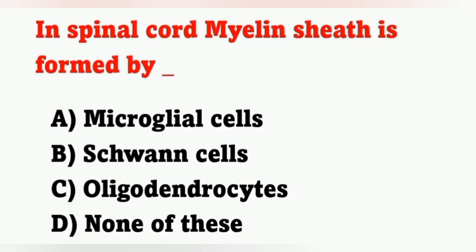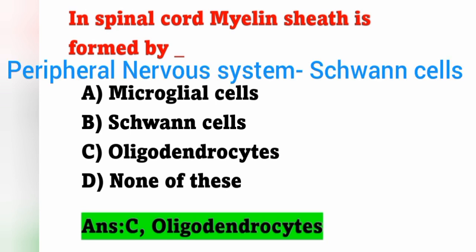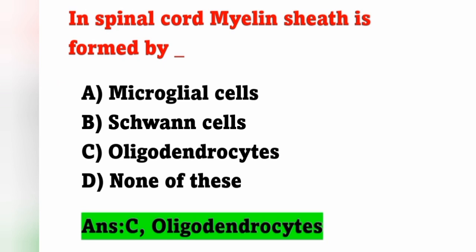Next question: In the spinal cord, myelin sheath is formed by — options: option A, microglial cells; option B, Schwann cells; option C, oligodendrocytes; option D, none of these. In the spinal cord, the myelin sheath is formed by oligodendrocytes. The central nervous system consists of brain and spinal cord, and in CNS the myelin sheath is formed by oligodendrocytes. In the peripheral nervous system, the myelin sheath is formed by Schwann cells. This is an important question.